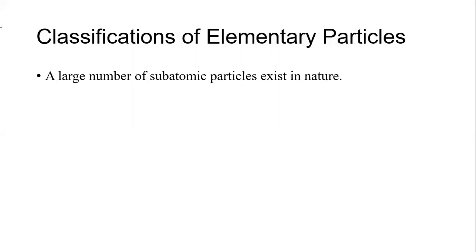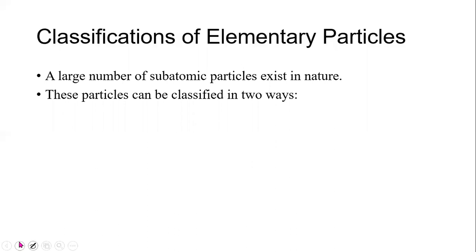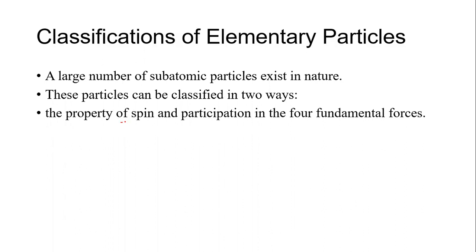A large number of sub-atomic particles exist in nature. These particles can be classified in two ways: by spin and by their participation in the four fundamental forces. We will start with classification by spin, looking at half-integer spin and integral spin.